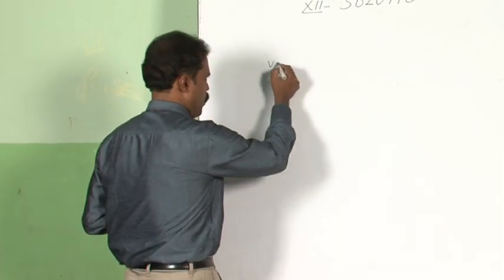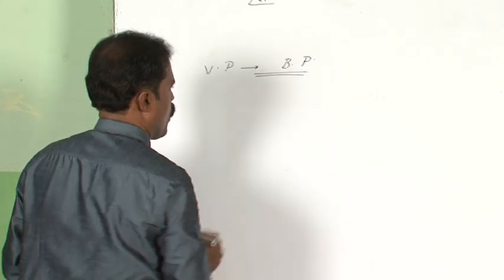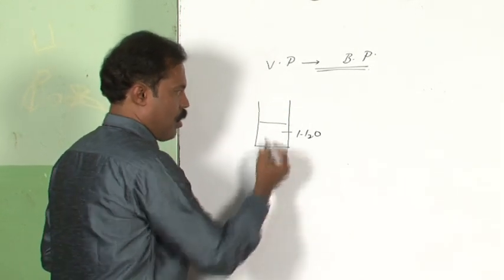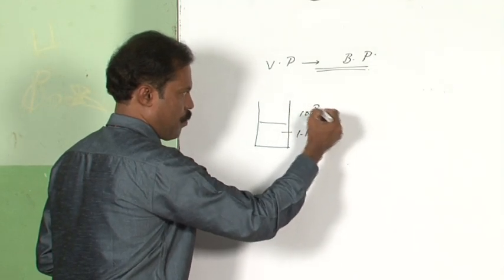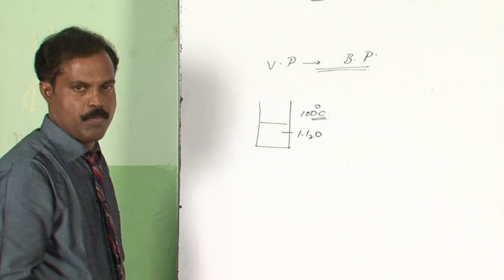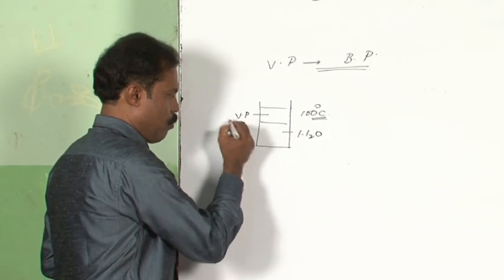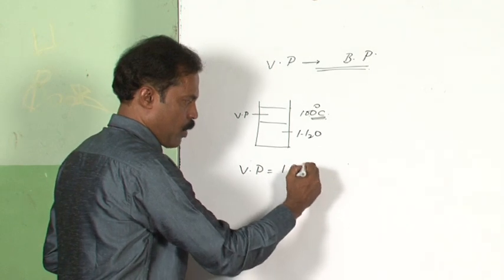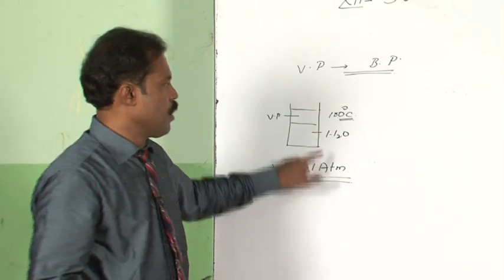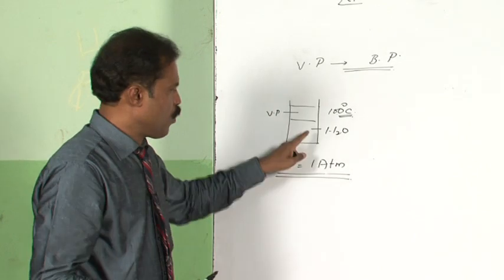Now let us see how vapor pressure influences the boiling point of a substance. The boiling point of water is 100 degree Celsius. Water boils at 100 degree Celsius because that is the temperature at which the vapor pressure becomes equal to atmospheric pressure, which is 1 atmosphere. So when vapor pressure becomes equal to 1 atmosphere, a liquid boils.